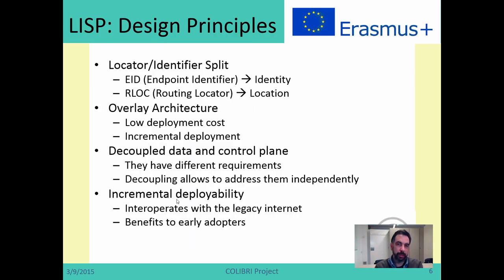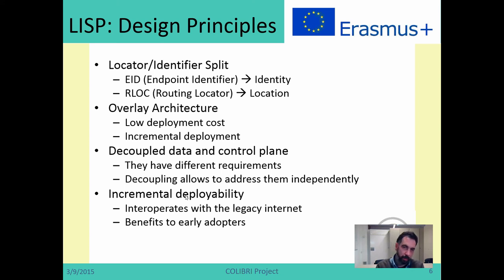Which are the design principles behind LISP? One of the biggest and most important things to understand about LISP is that it splits IP addresses into two sets. One set is called EIDs — Endpoint Identifiers — and the other ones are called RLOCs — Routing Locators. In both cases they are IP addresses, either IPv4 or IPv6, but an IP address will be either an EID or an RLOC — it cannot be both at the same time.